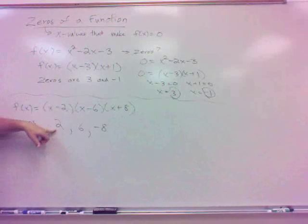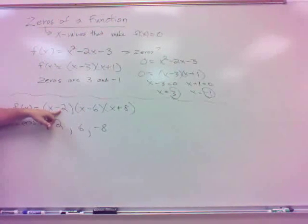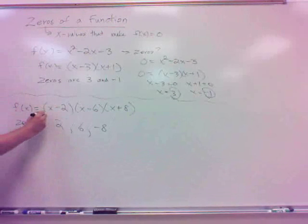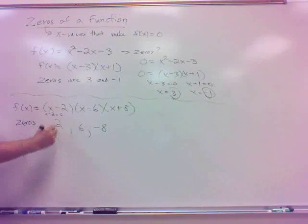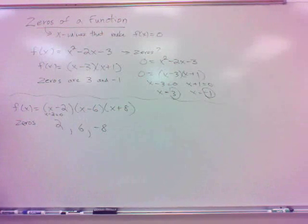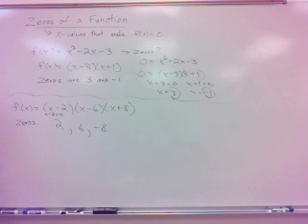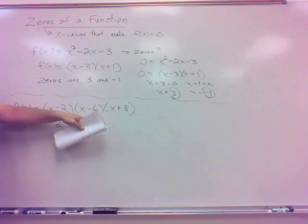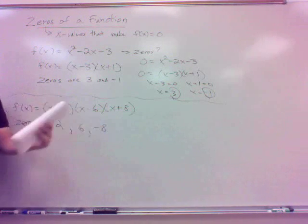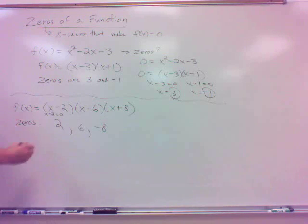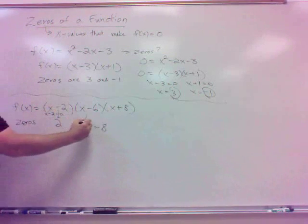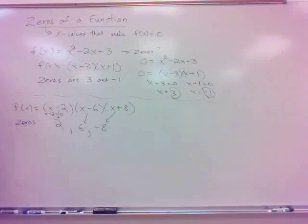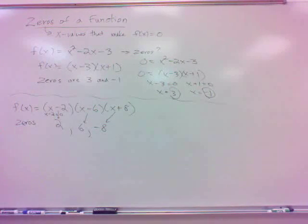How do we get these? Why is it 2 from x minus 2? The reason is we set x minus 2 equal to zero and add 2, giving us x equals 2. For x minus 6, we add 6. For x plus 8, we subtract 8. There's a definite linkage between the factor and the zero.